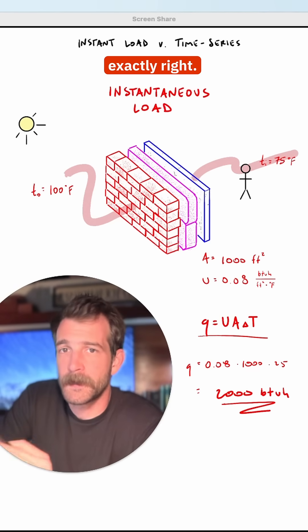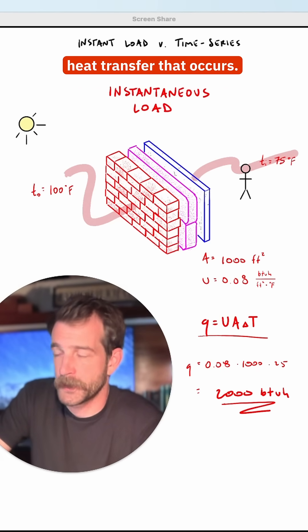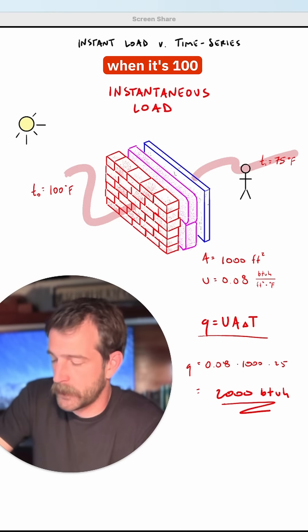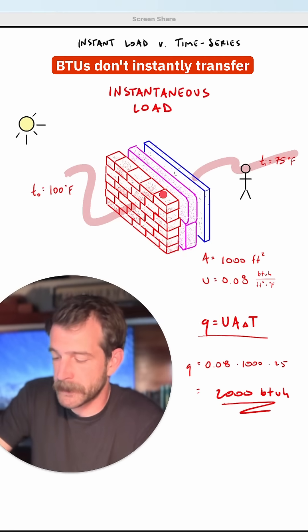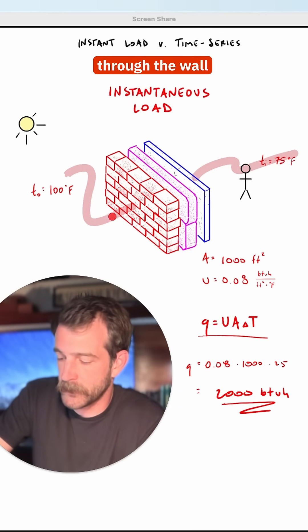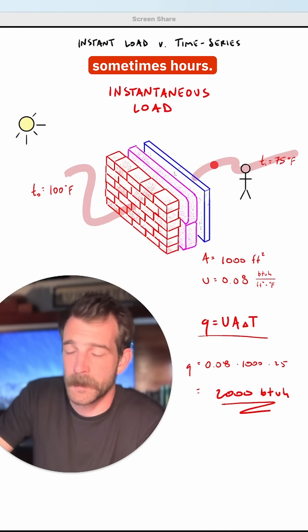It's a good estimate, but it's not exactly right because there's a time delay to the heat transfer that occurs. If we're calculating this for 2 p.m. when it's 100 degrees outside, these 2000 BTUs don't instantly transfer to the space. They may transfer through the wall assembly over time, sometimes hours.